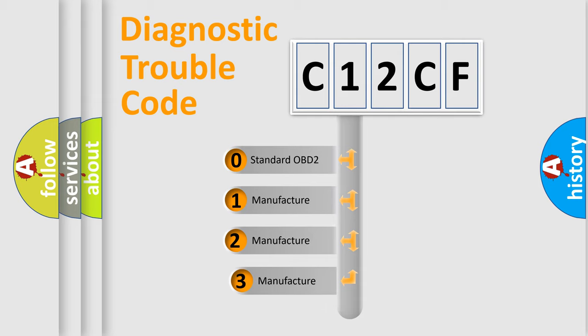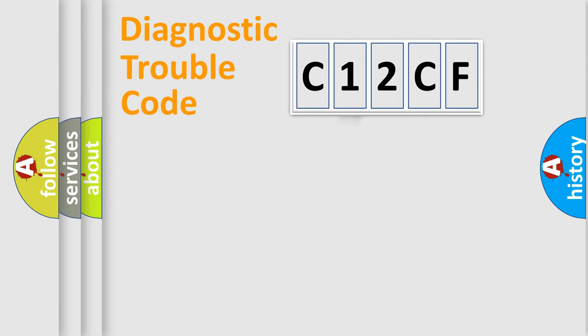If the second character is expressed as zero, it is a standardized error. In the case of numbers 1, 2, or 3, it is a more precise expression of the car-specific error.